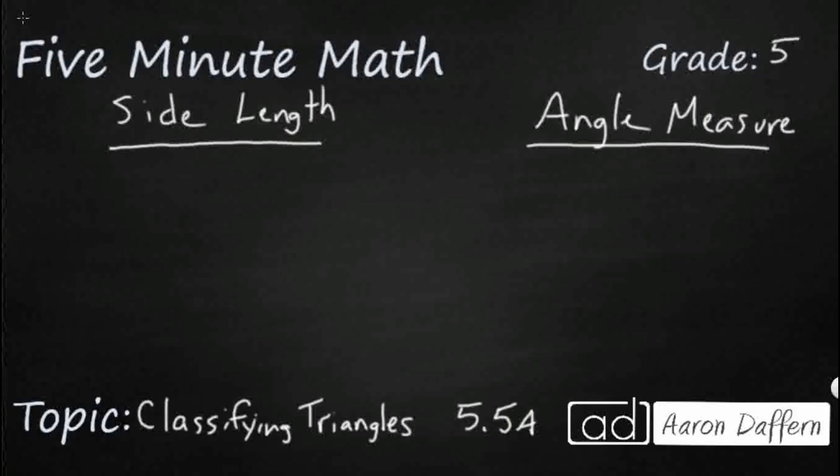So we've got side length. If you've got zero equal sides, so no sides are the same, that is a scalene triangle. When we're talking about a scalene triangle, it's just kind of a weird-looking triangle. So we'll do something like this. This is a scalene triangle, and you might see one hash mark, two hash marks, and three hash marks, which means zero sides are the same length. They're all different.